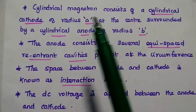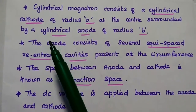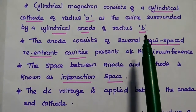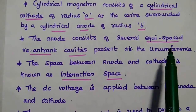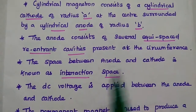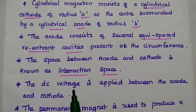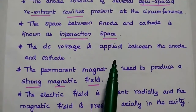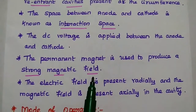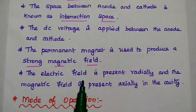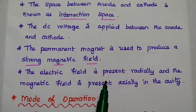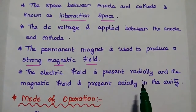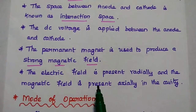The cylindrical magnetron consists of a cylindrical cathode of radius A at the center, surrounded by a cylindrical anode of radius B. The anode consists of several equispaced cavities in its circumference, and the space between the anode and cathode is known as the interaction space. The DC supply voltage is applied between the cathode and anode, and the permanent magnet produces a strong magnetic field. The electric field is present radially and the magnetic field is present axially, meaning both are perpendicular to each other.